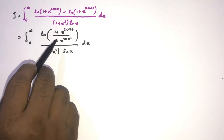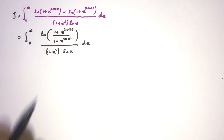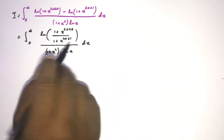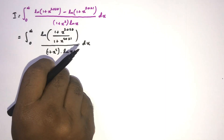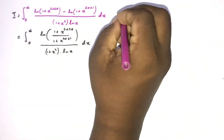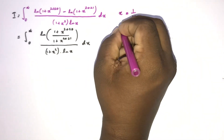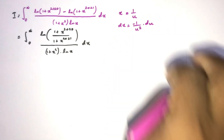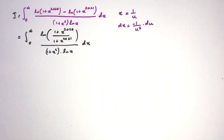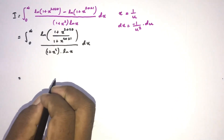So I is equal to the integral of that expression with natural log of (1 + x^2) and natural log of x. Now we can continue with a u-substitution. Let x = 1/u, then dx = -1/u^2 du. Plugging in, we have the integral from 0 to infinity — and we need to change the boundary limits accordingly.